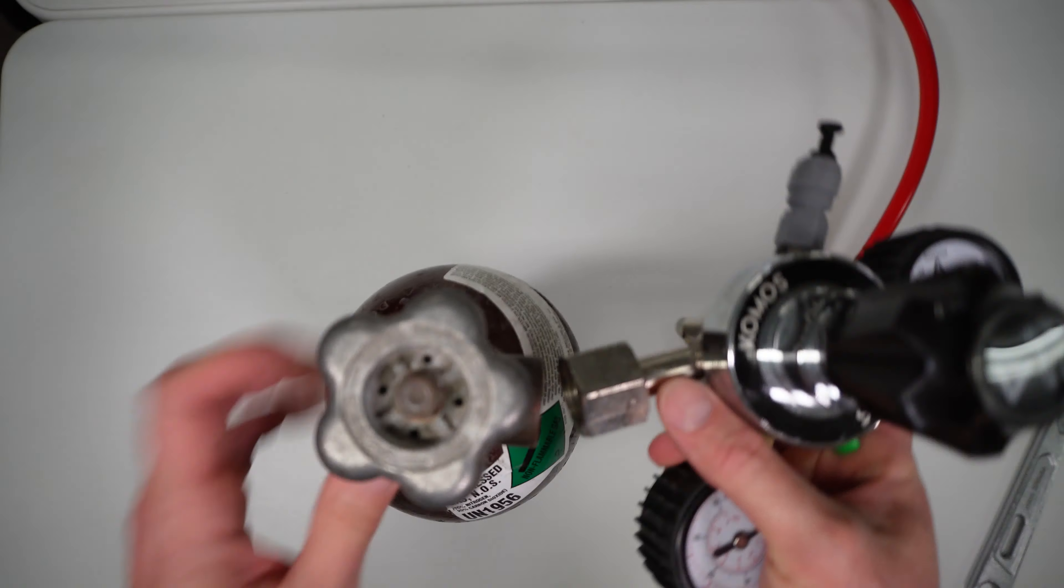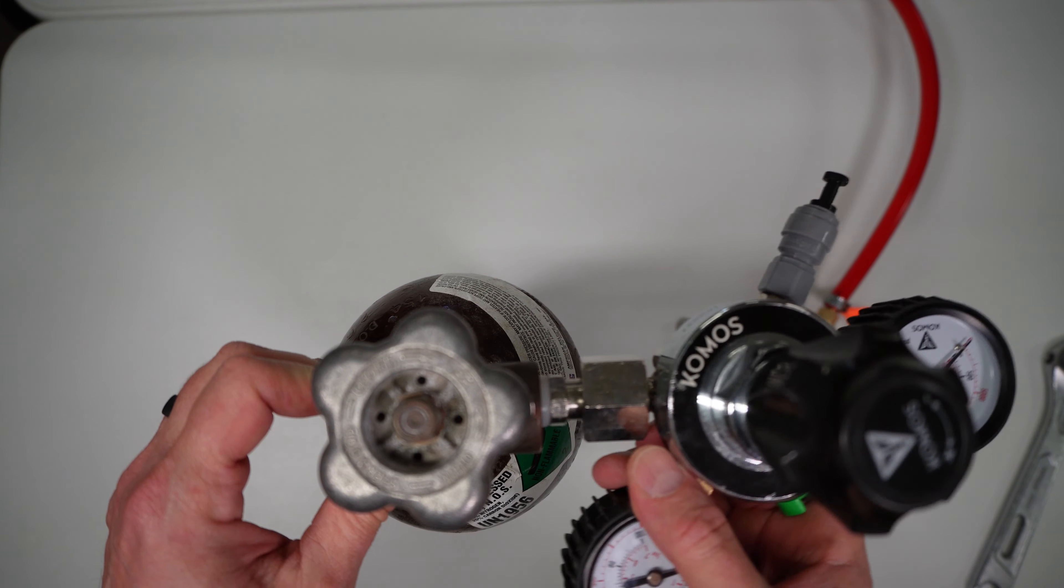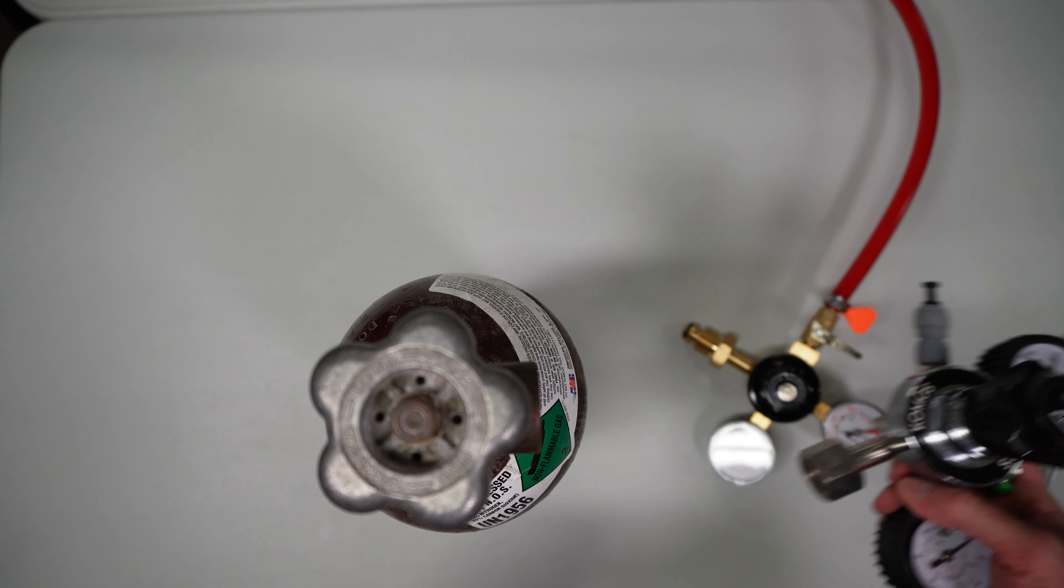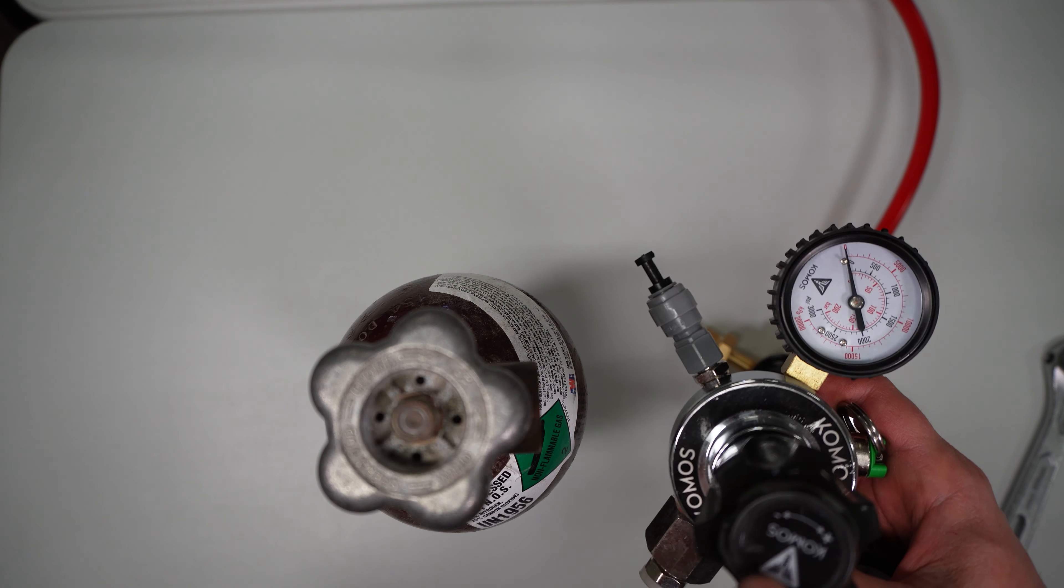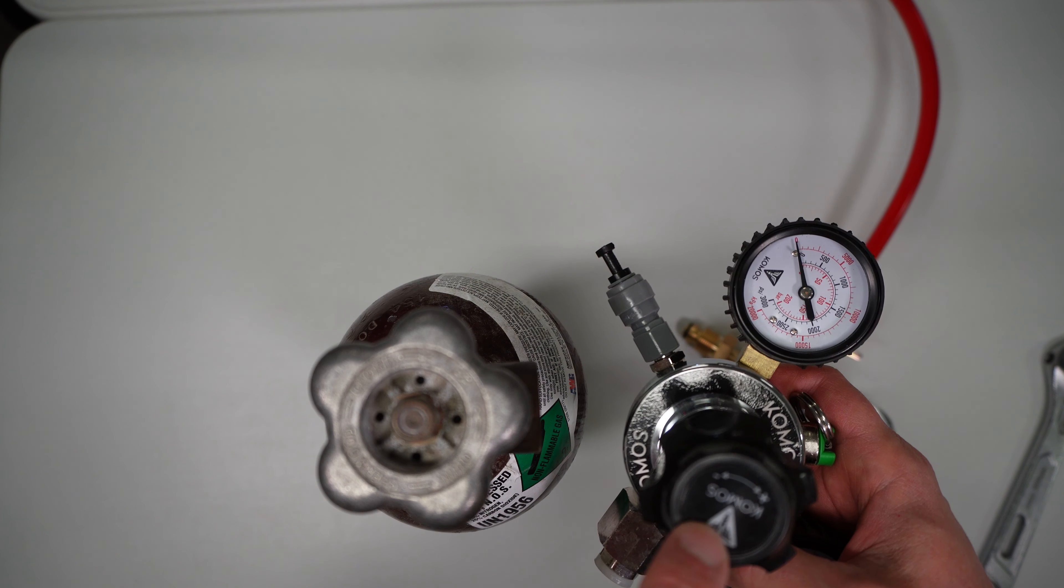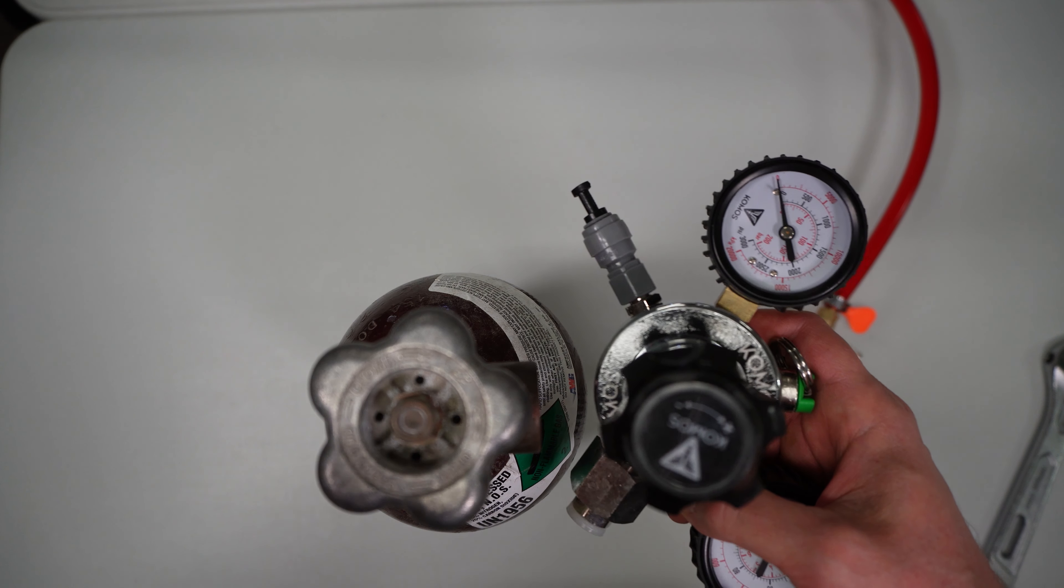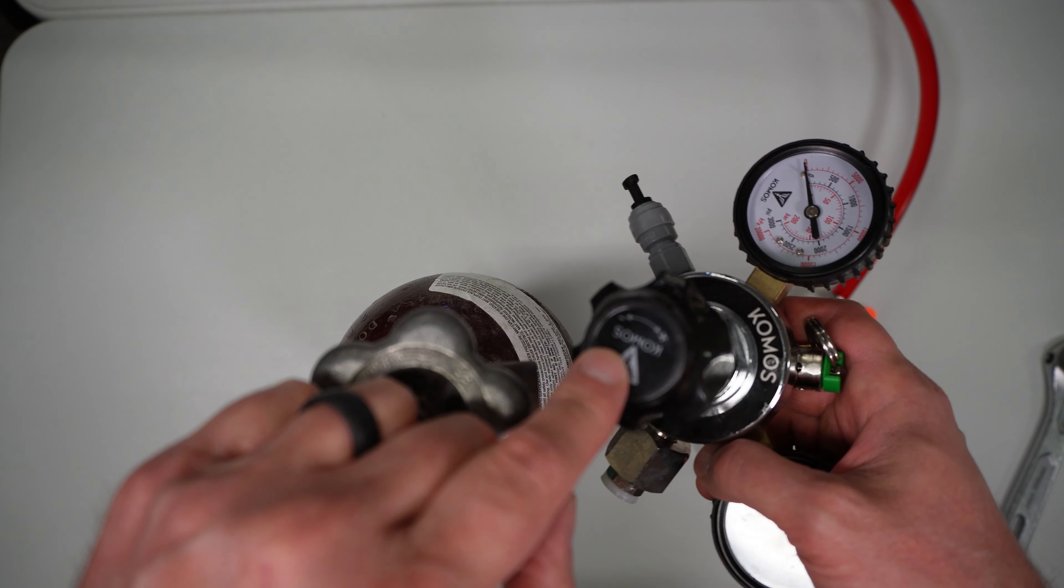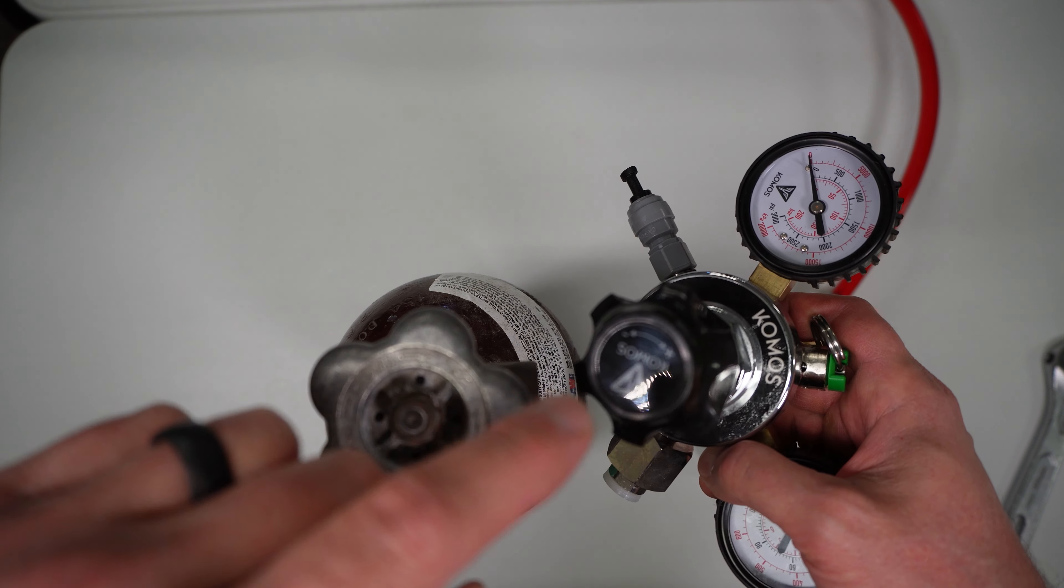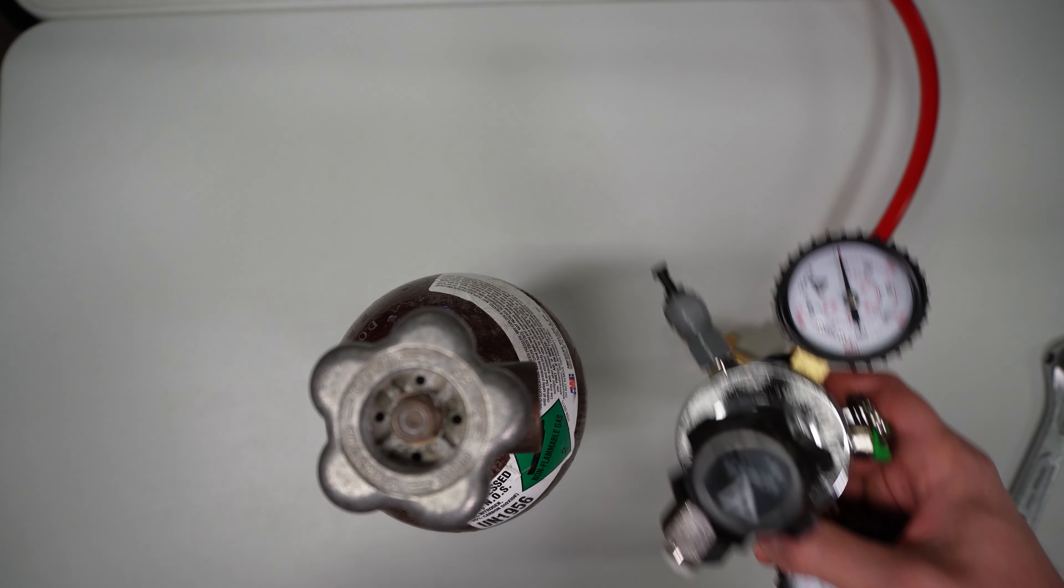They don't work. This is a different doohickey. They don't work together. However, the Comos regulators state on their website and in the owner's manual that this regulator can be used with CO2 and with nitrogen and argon and beer gas. So, how do we do that?